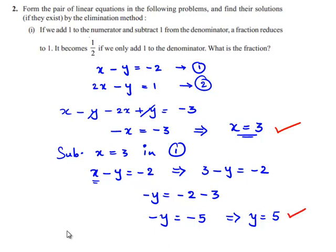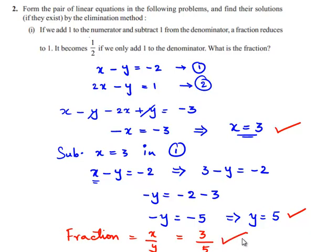We assumed the fraction to be x by y. So in place of x we write 3, and in place of y we write 5. Hence, the required fraction is 3 by 5.